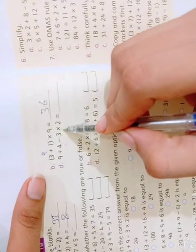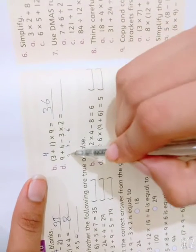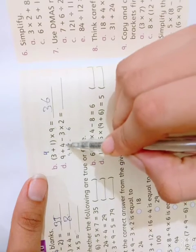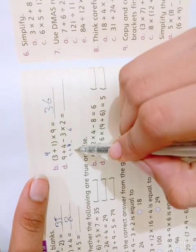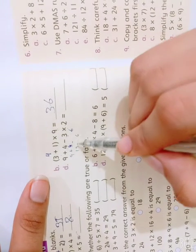6 times 9 is 54. Then 9 plus 4 is 13. We will add 13, then minus 6, and the answer will be 7.